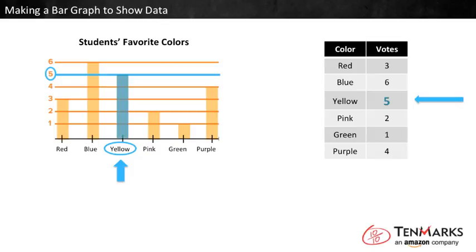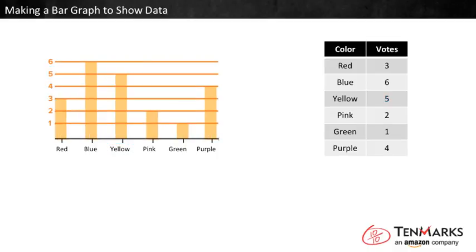If you could still see the X's from the line plot, how many would there be above yellow? There would be five, one for each vote — a stack of five X's would reach up to the line marked five. To be complete, our bar graph needs a couple more parts. At the top there should be a title telling exactly what the data is about. In this graph, "Students' Favorite Colors" is a good title because it tells about both the categories and the numbers.